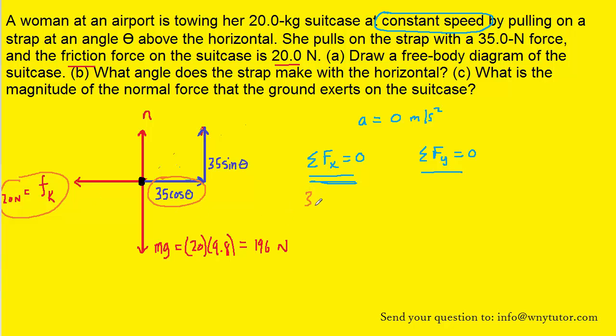So, the two forces in the x direction will be 35 cosine of theta and then minus the 20 newtons. And as we noted, that's equal to zero.